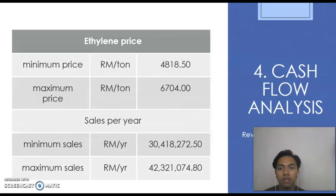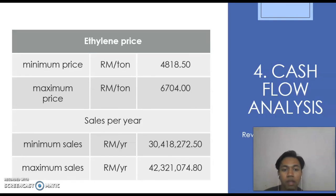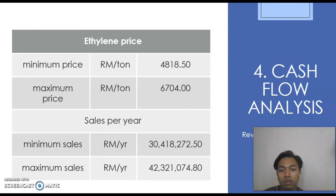For the last part, which is the cash flow analysis, I will explain the revenue we get by selling our ethylene product. In the market, ethylene price is RM4,818 for minimum price and RM6,704 for maximum price. If we multiply with the product we produce in our plant, in one year we will get RM30,418,272 for minimum sales and RM42,321,074 for maximum sales.